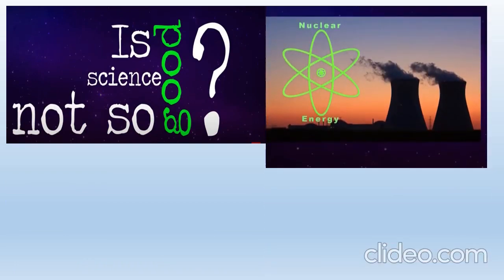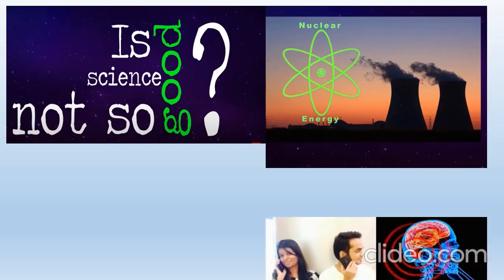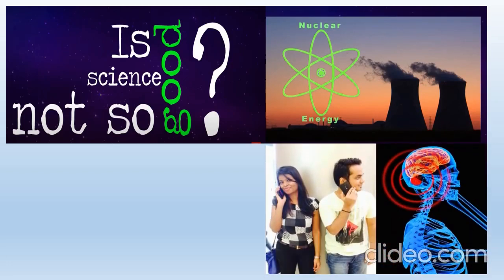Is science good or not so good? We will see with two examples. Nuclear energy can be used to make nuclear power, or it can be used to make a nuclear bomb, which is not a good use of science. iPhones help us in communication, but they can damage our brain cells. So it is up to us how we use science.